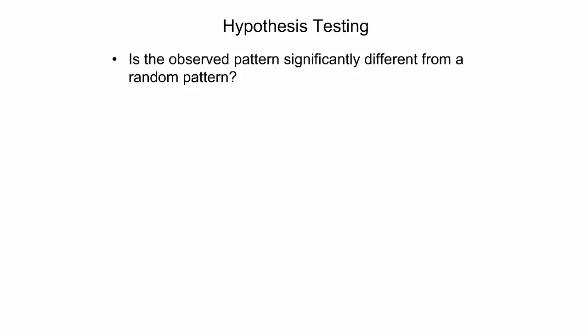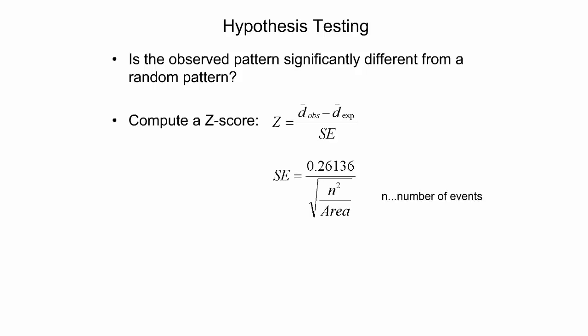The null hypothesis of this test is that the observed features are randomly distributed. For the test, a z-score can be computed. As the equation shows, the computation of a z-score requires the standard error of the expected mean nearest-neighbor distance in a random point pattern. Its computation requires the area of the study region and the number of point events, denoted as n.